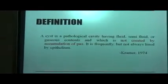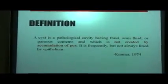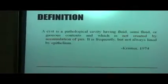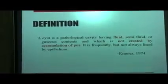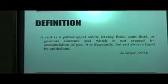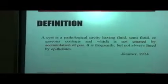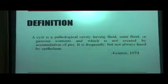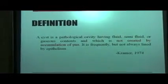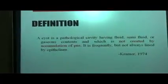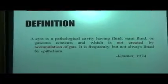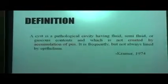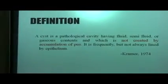In order to understand cysts, first we need to see what is the right definition of a cyst. A cyst is a pathological cavity having fluid, semi-fluid or gaseous contents, and which is not created by accumulation of pus. The point to be noted here is that it is not created by the accumulation of pus, which is the right definition for an abscess. It is frequently but not always lined by the epithelium. This was the definition given by Cramer in year 1974.